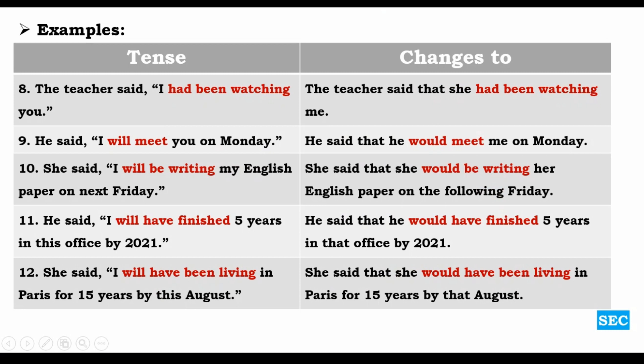'He said, I will meet you on Monday' — simple future — becomes 'He said that he would meet me.' 'Will meet' becomes 'would meet.' 'I will be writing' — future continuous — becomes 'she would be writing.' 'I will have finished five years in this office by 2021' — future perfect — becomes 'He said that he would have finished five years in that office by 2021.' 'I will have been living in Paris for 15 years' — future perfect continuous — becomes 'she would have been living in Paris for 15 years.' Only 'will' changes to 'would' in future tense forms.